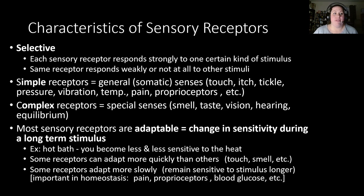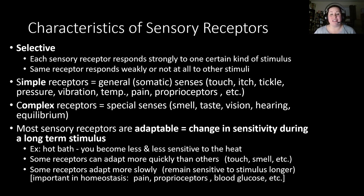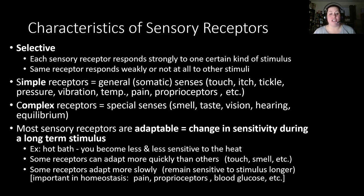Sensory receptors are very selective — each responds strongly to only one kind of stimuli. A cold receptor responds only to cold stimuli; the same receptor may respond weakly or not at all to another stimulus. Simple receptors are found in general senses like touch, itch, tickle, pressure, vibration, temperature, pain, and proprioception. Complex receptors are found with special organs like smell, taste, vision, hearing, and equilibrium, and are very localized and complex in structure.